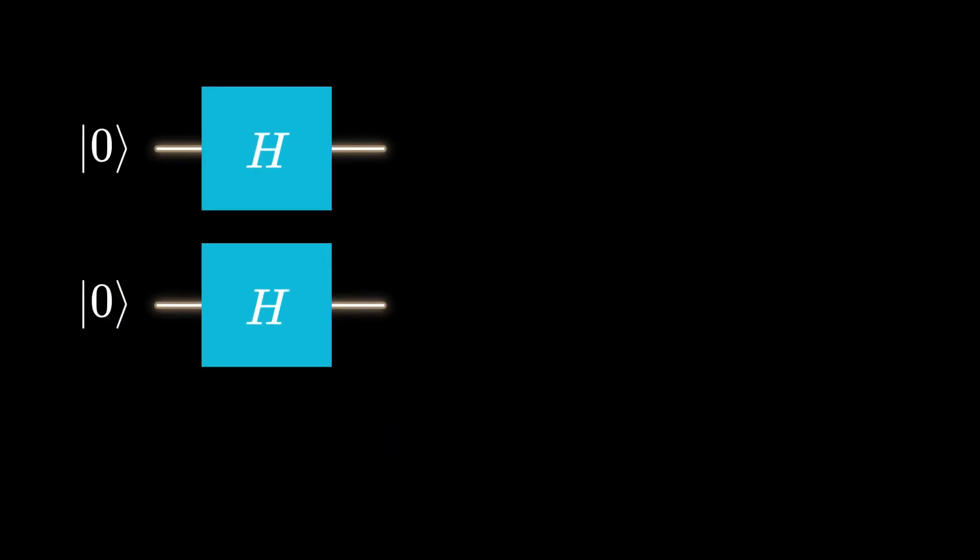Now consider a two-qubit system with two parallel Hadamard gates. What would be the output? The output varies based on different inputs, resulting in four possible combinations.